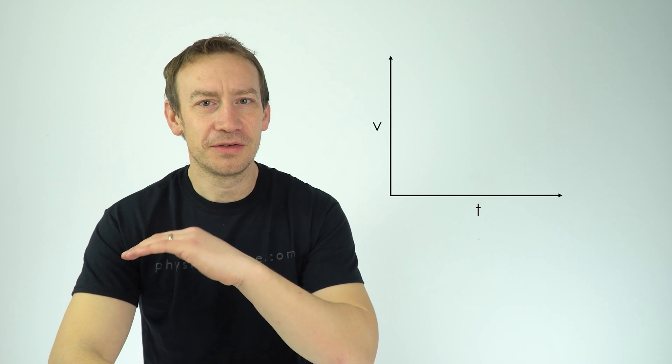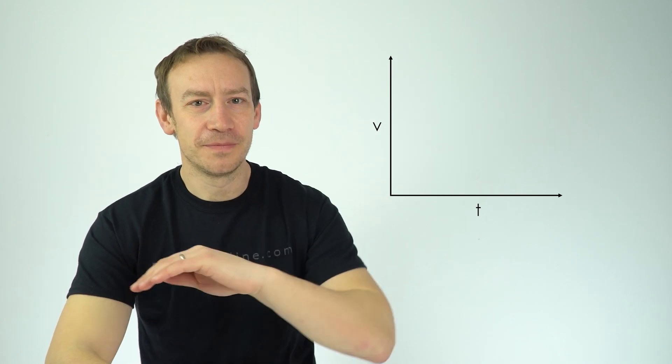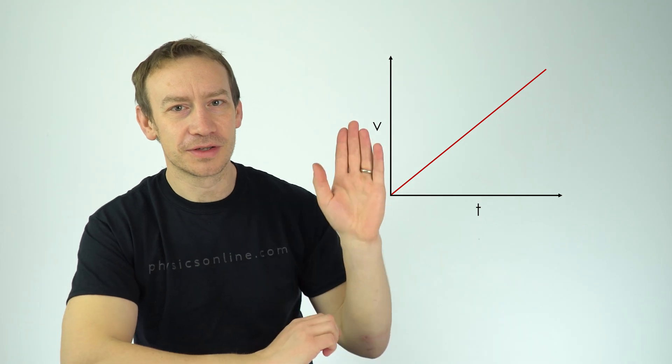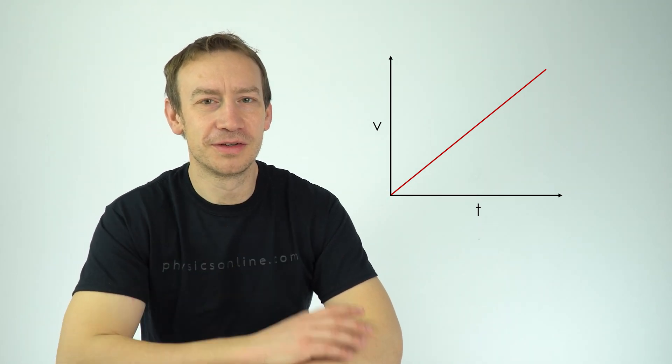Now here, because there's going to be this uniform acceleration, it's going to increase in velocity at a constant rate, and therefore we've got a constant gradient to show that constant acceleration.